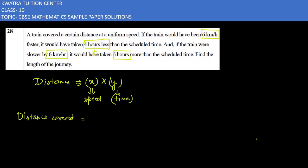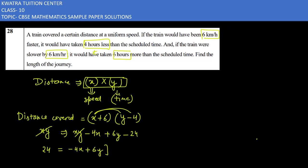So speed is (x+6) and time is (y-4). Now let us open to our right side: x and y would be xy. (x+6) multiply (y-4), then it would be xy minus 4x plus 6y minus 24. xy and xy cancel, minus 24 left side पर आ जाएगा और आपके पास क्या बचेगा: minus 4x plus 6y.